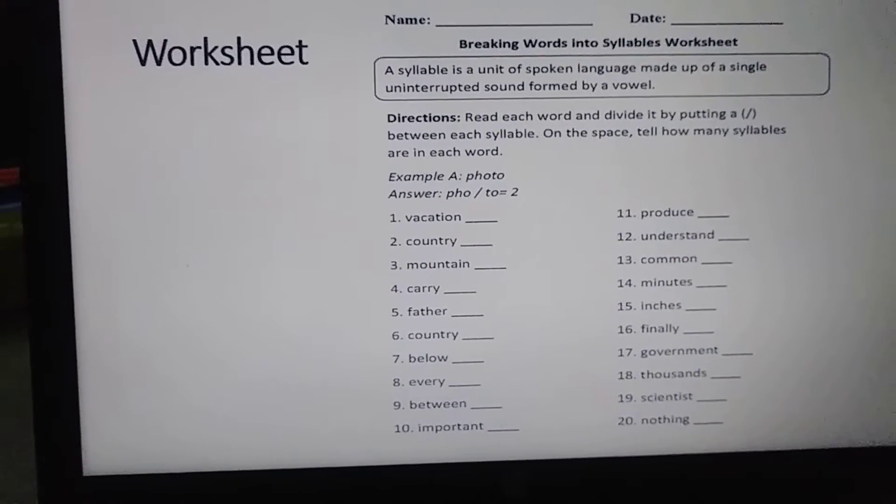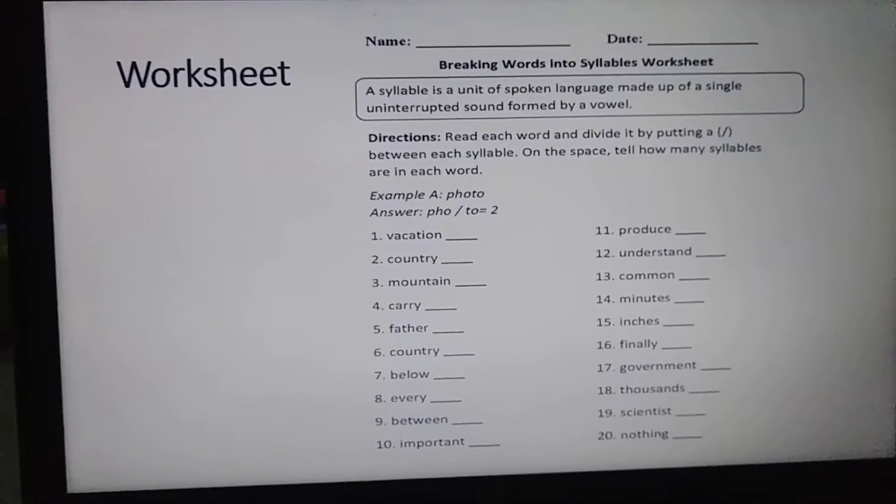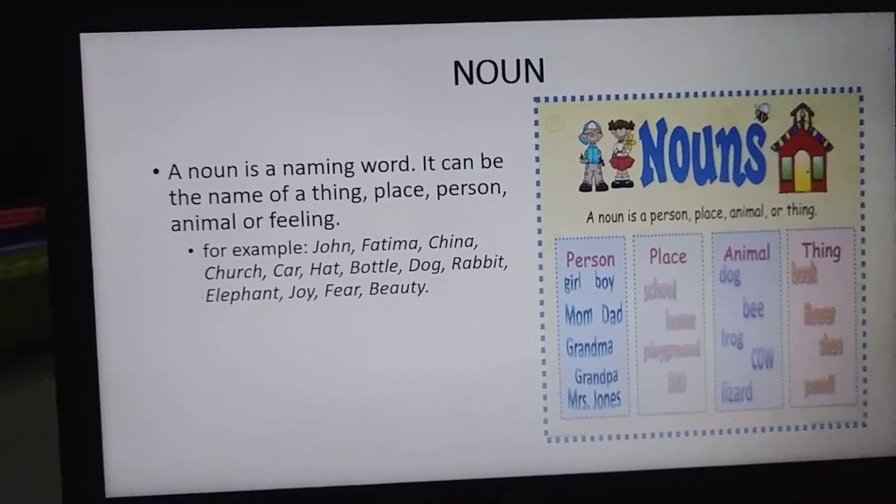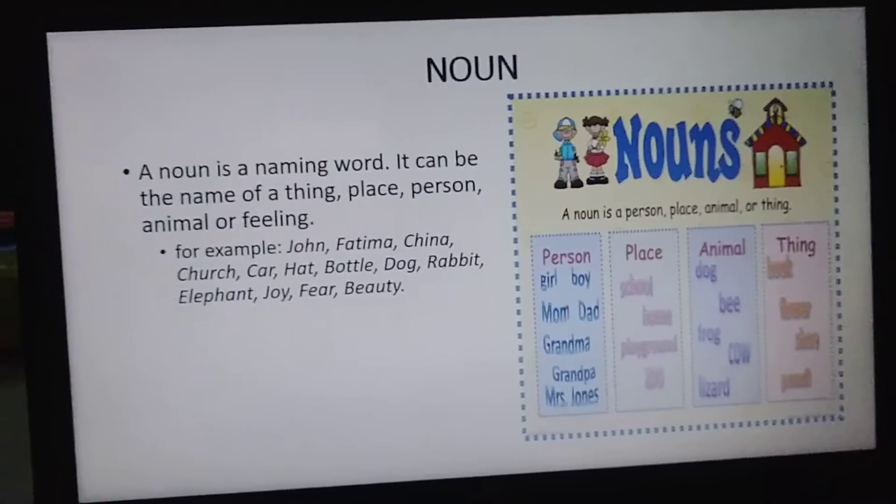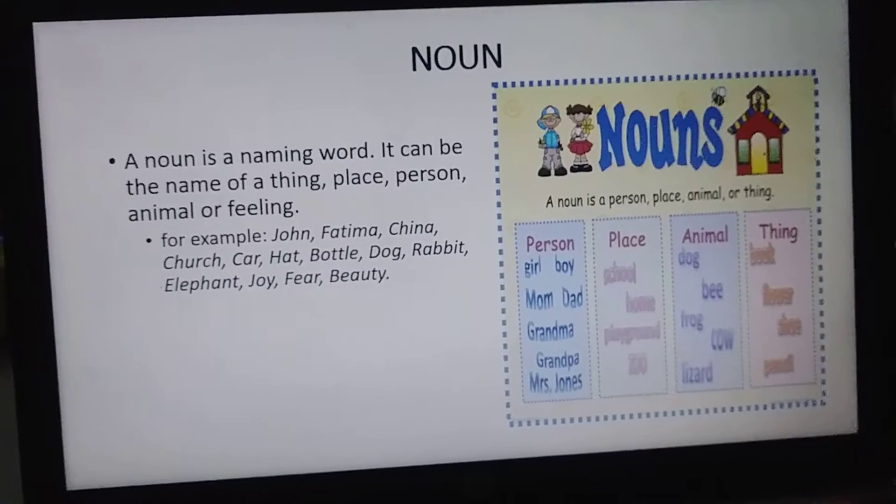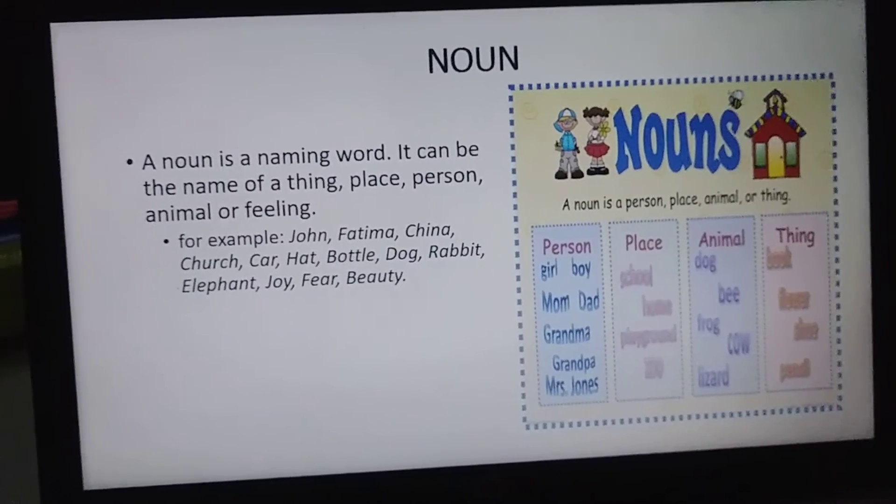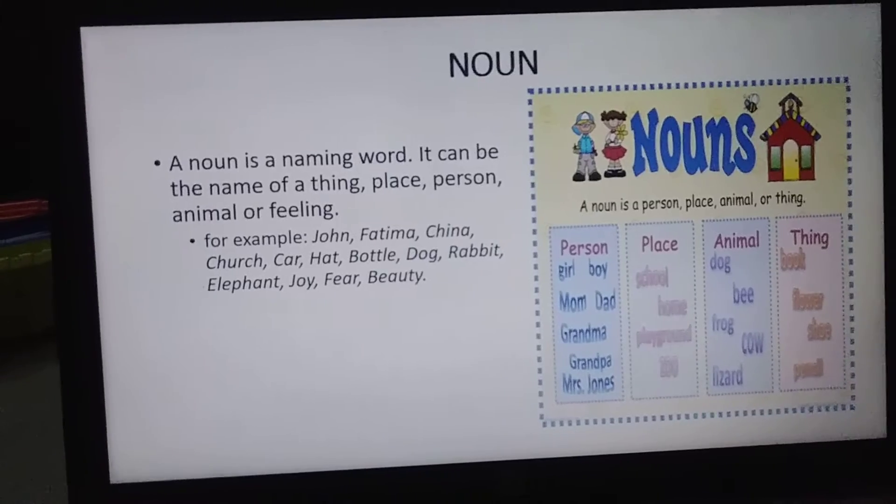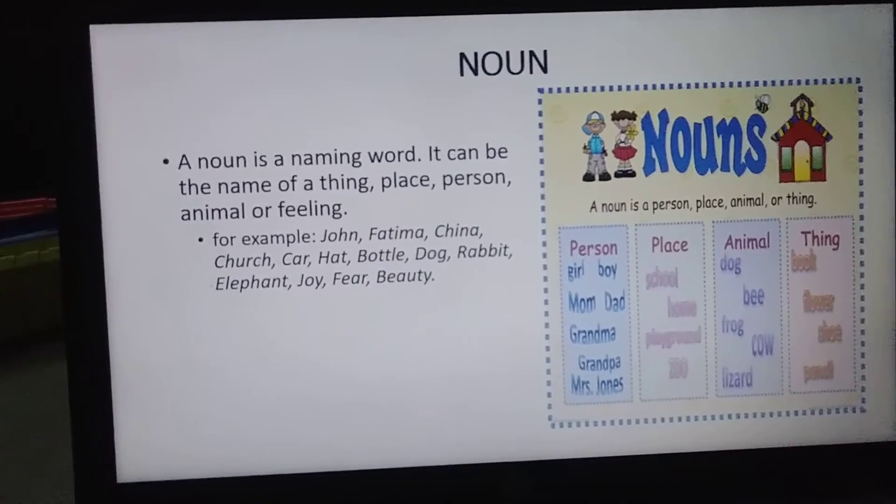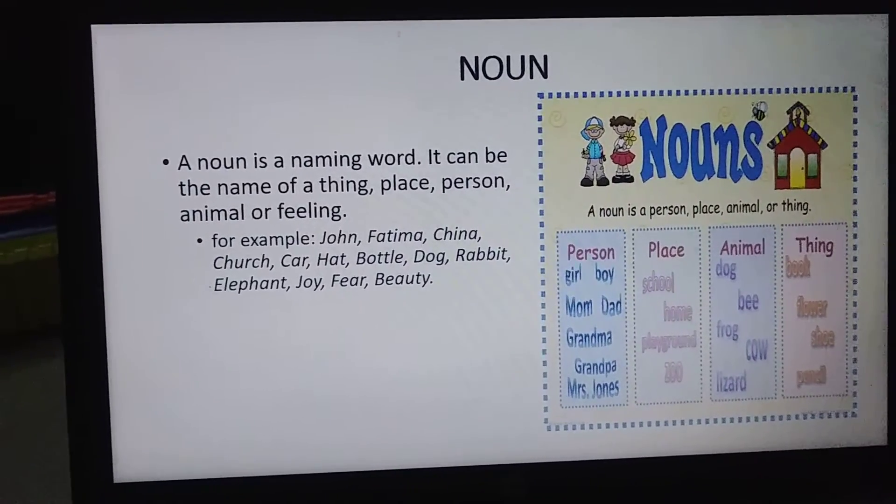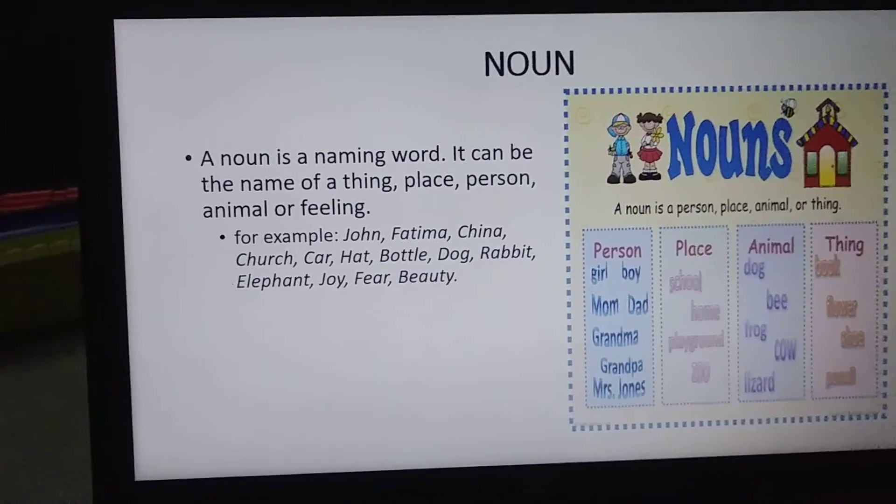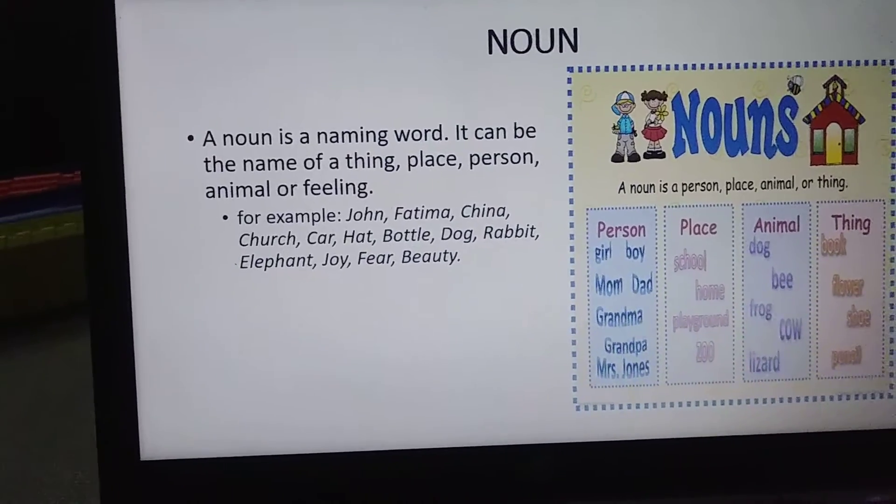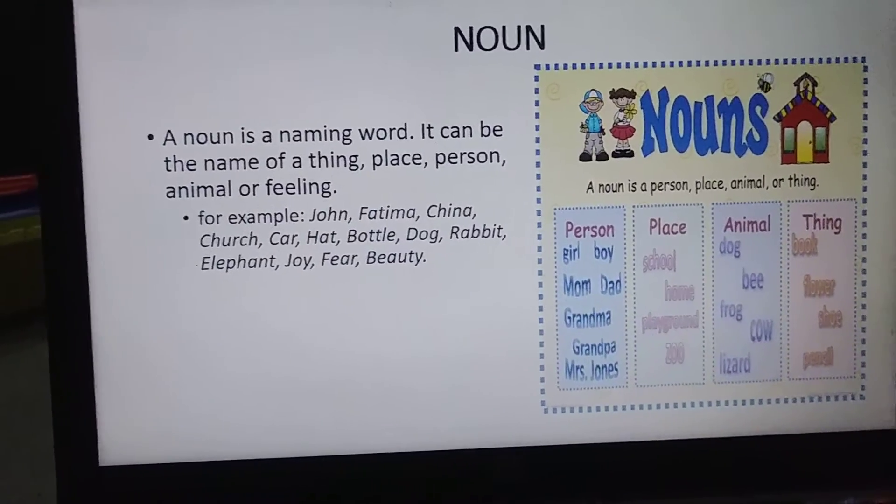Exercise for me - this worksheet for me and send the picture to me. Now let's move forward. Yes, noun. We already did a little bit about noun in the class. Maybe some of you remember something - I sent you to the window and asked you what you can see from the window and you counted so many things. The thing is, at that time I told you that there are things and everything has a name to it. Noun is a naming word. It can be the name of a thing, place, person, animal, or feeling. For example: John, Fatima, China, church, car, hat, bottle, dog, rabbit, elephant, joy, fear, and beauty.